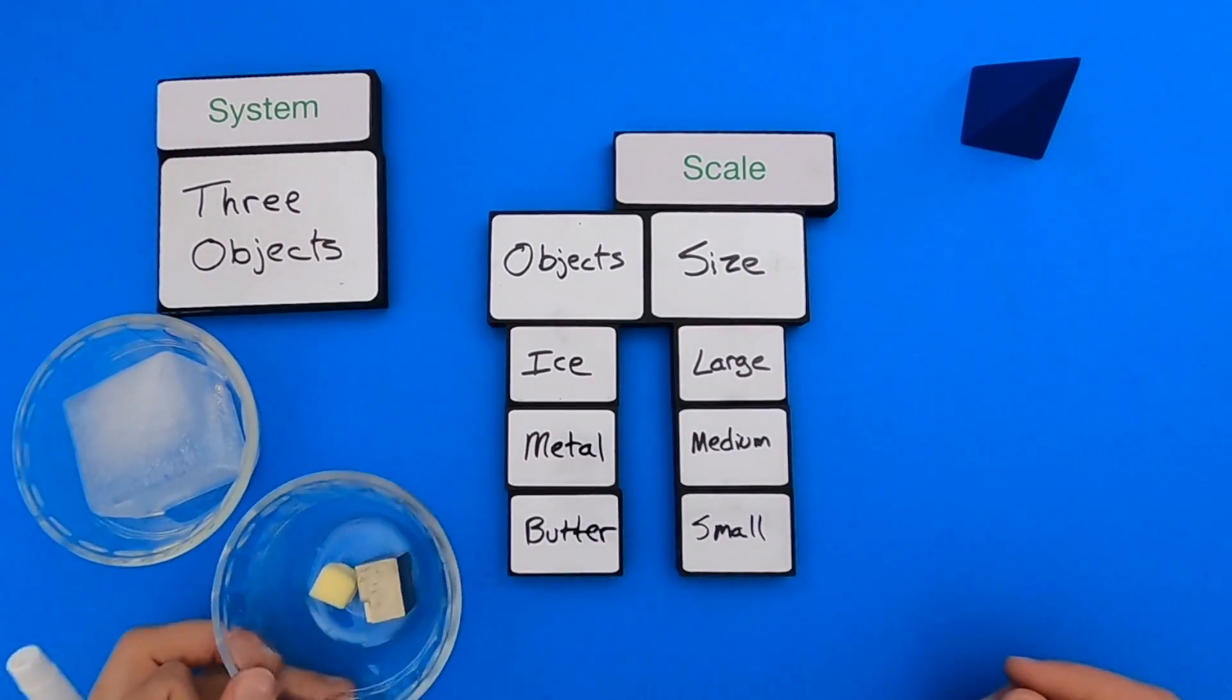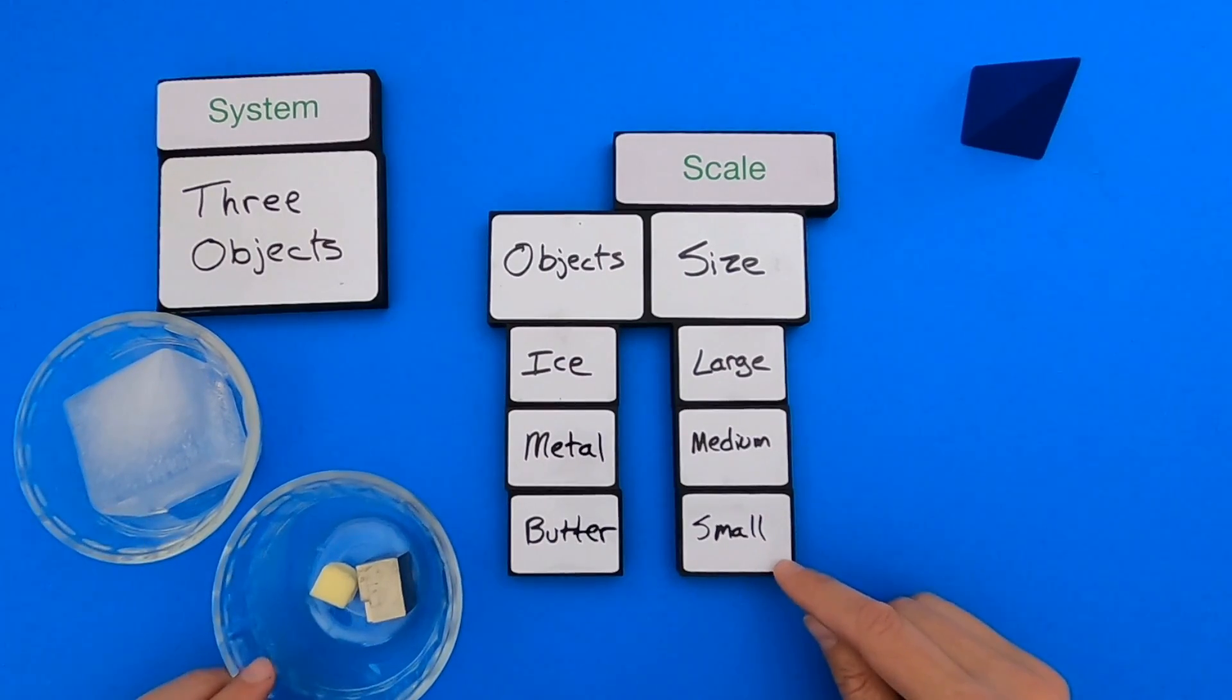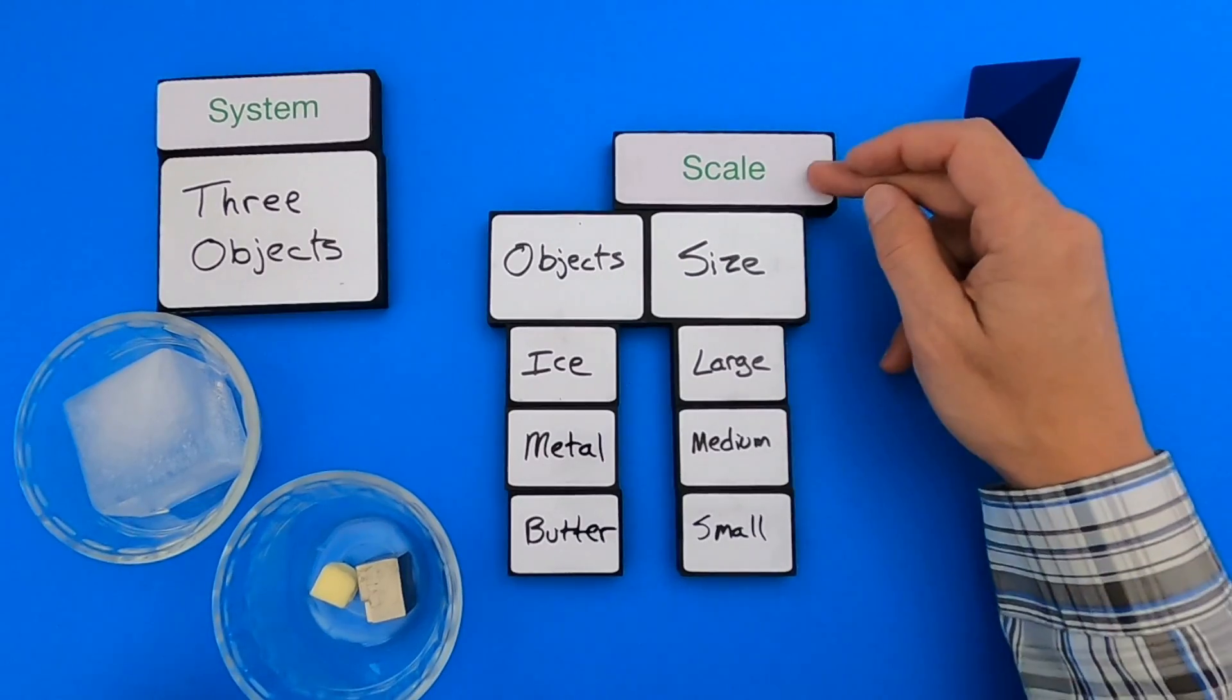So if I were to put down the different scale of these three objects, these three objects vary from the very small, which is going to be butter, to the very large, which is going to be ice. So that's a type of size scale.